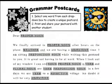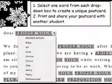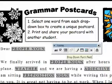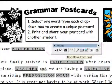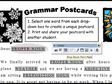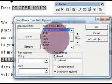Another way to produce a cloze procedure is by using list boxes, where the missing word or words are replaced by a drop-down list of possibilities. To place a drop-down list box in your text, open up the Forms toolbar. Click the list box icon and place it into the correct position within the text. Next, double-click the list box and enter all the different items.